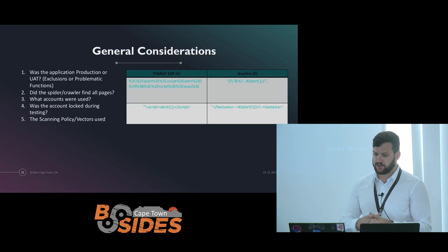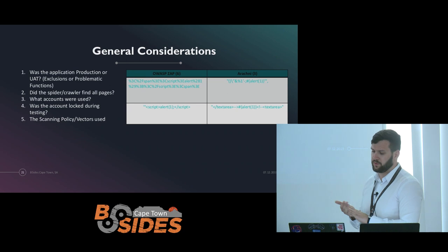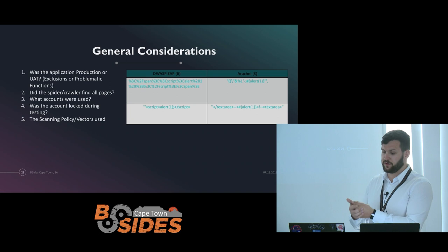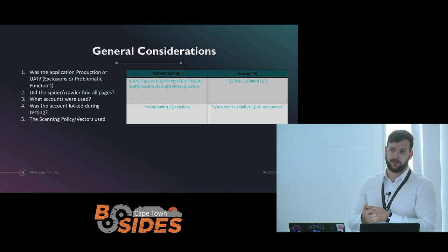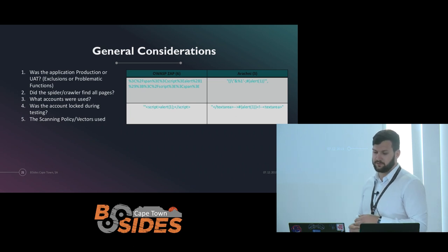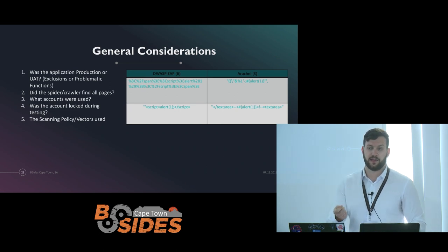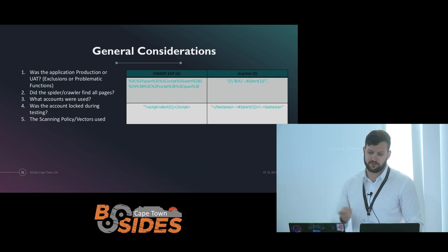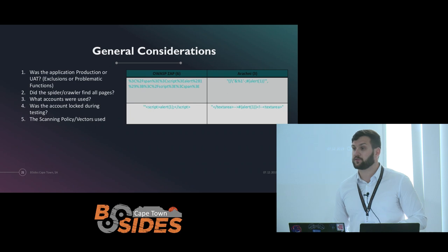There are some general considerations before using these tools. When scanning web applications, you want to make sure you consider these items to best evaluate the application. If you're not the one testing, these are things you need to be asking your vendors or subcontractors. Is the application in production or UAT? If yes, it comes with different caveats. Did the spider or crawler find all the pages? The automated tools rely heavily on the program's ability to visit all the hrefs, links, and discover all the pages — which links directly with the accounts being used during testing.